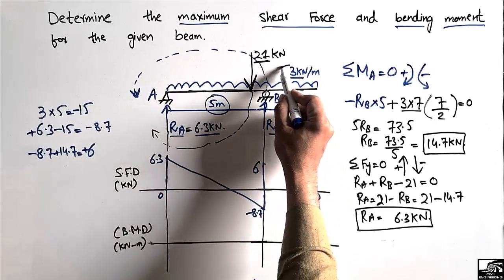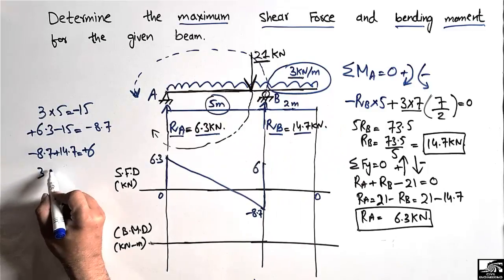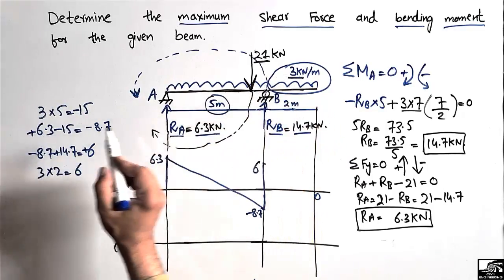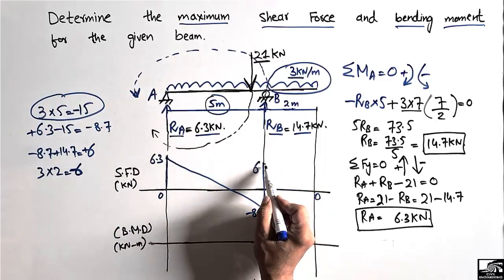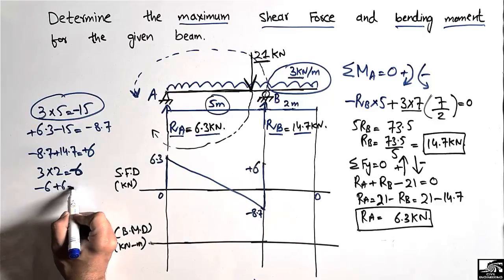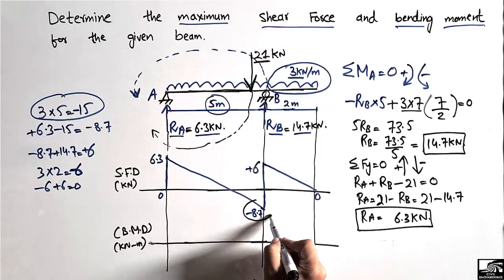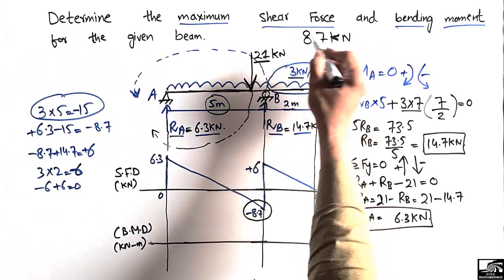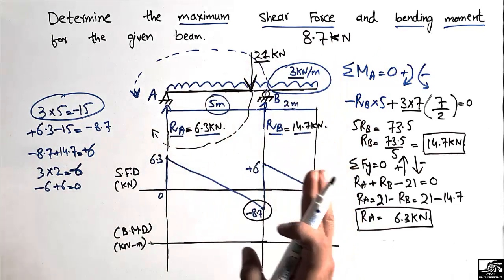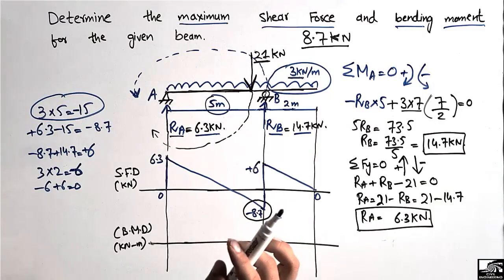Over the remaining 2-meter overhang, the distributed load of 3 kN/m acts: 3 × 2 = 6 kN downward, so −6. Adding to +6 gives +6 − 6 = 0. The shear force returns to zero at the free end, completing the shear force diagram. The maximum shear force is 8.7 kN — the sign is not considered for the magnitude.